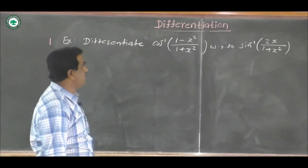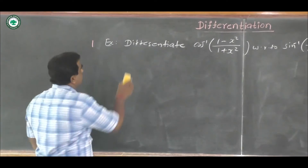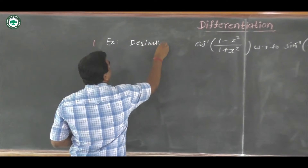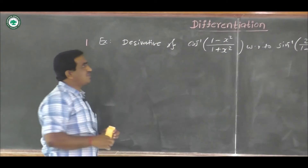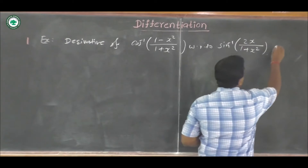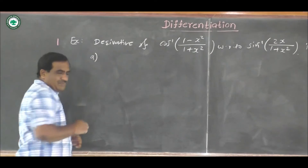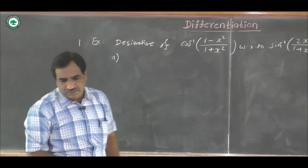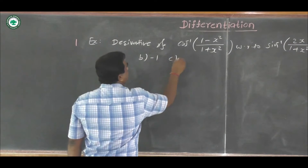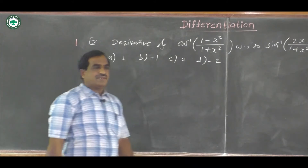We have to find the derivative. We can write the derivative of cos inverse of (1 minus x square upon 1 plus x square) with respect to sin inverse of (2x upon 1 plus x square). This is an MCQ — multiple choice question. Options are given: option A is 1, option B is minus 1, option C is 2, and option D is minus 2. Now we have to find the correct option.